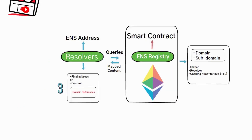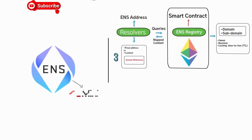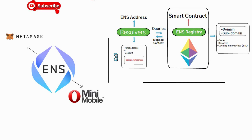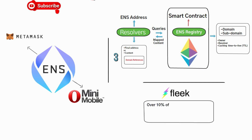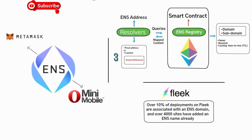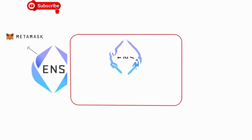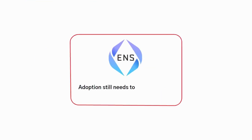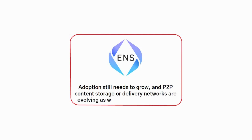Right now, ENS is growing in popularity in browsers like Opera Mobile, Metamask Mobile, or any popular browser using the Metamask extension that supports .eth domains. Even on Fleek, ENS domains are gaining a lot of traction. Over 10% of deployments on Fleek are associated with an ENS domain, and over 4,000 sites have already added an ENS name. ENS adoption still needs to grow, and P2P content storage or delivery networks are evolving as well to better achieve this.